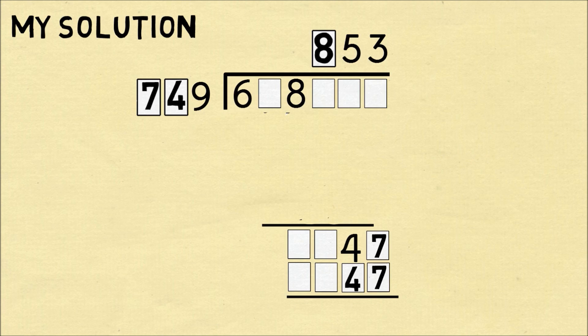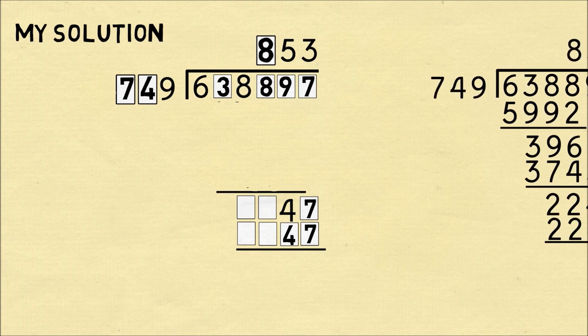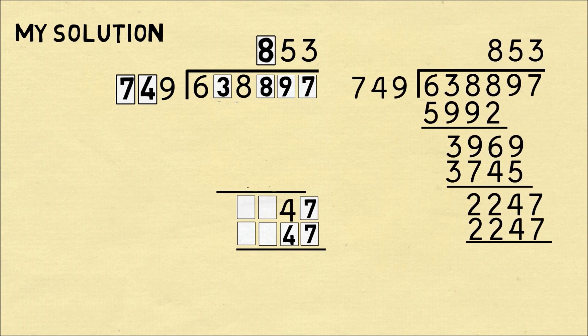And that's pretty much all the information we need once we know that. We're dividing by seven hundred and forty-nine, the result is eight hundred and fifty-three. We can go and reverse and multiply these two numbers. That'll get us what the original number is, six hundred thirty-eight thousand eight hundred ninety-seven, and from there we can just do the problem as normal and we can figure out all of the remaining missing digits.